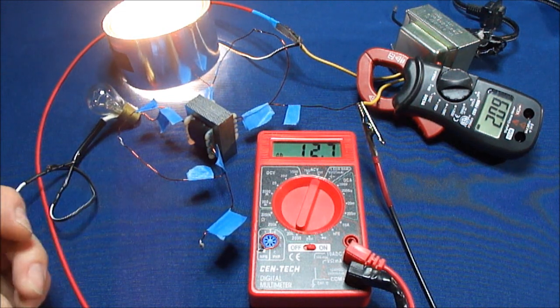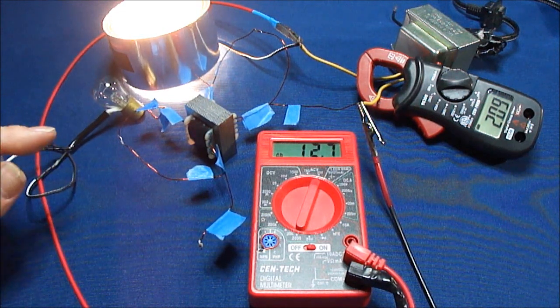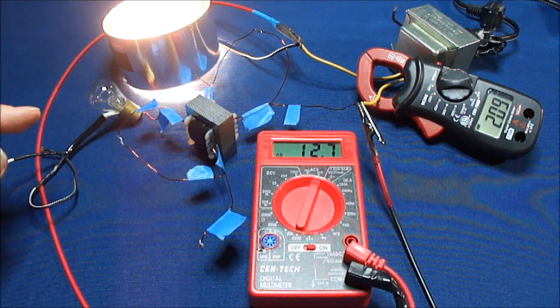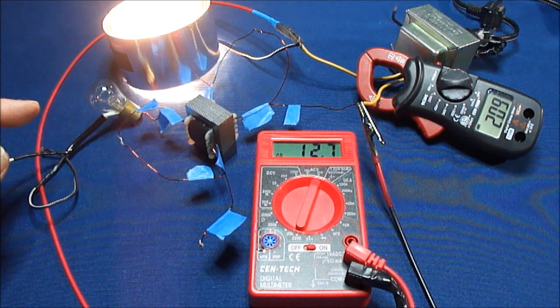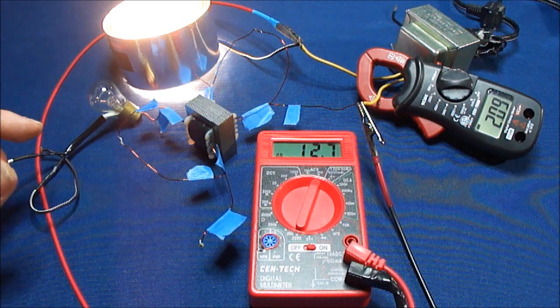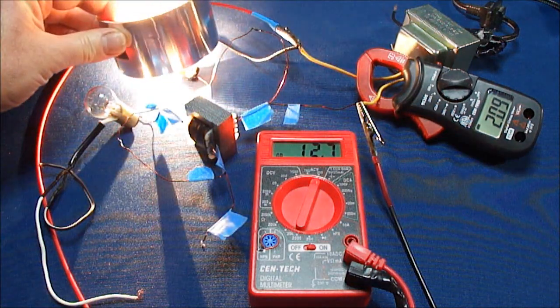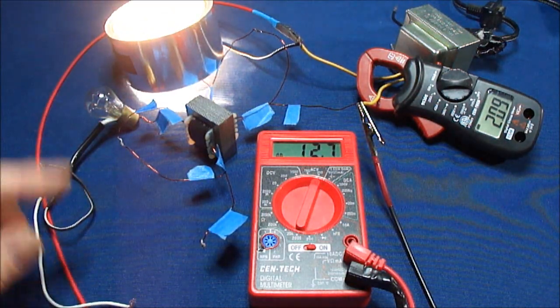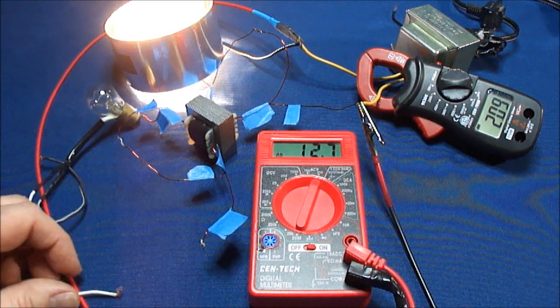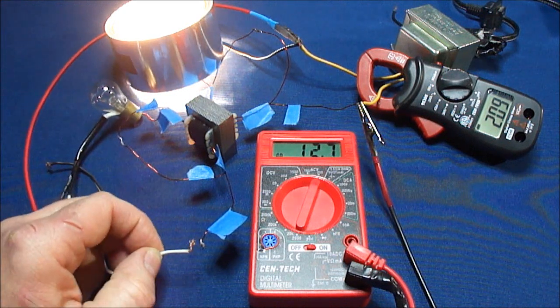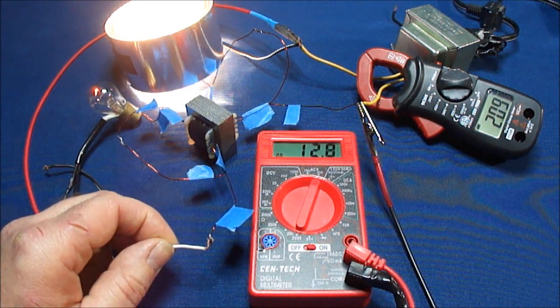You got a couple of advantages going on with this. The transformer is also letting you use it in series with the load. So say you want to run a light bulb. You can run a light bulb as you are powering it through the transformer. You are still getting usable electricity off the secondary.